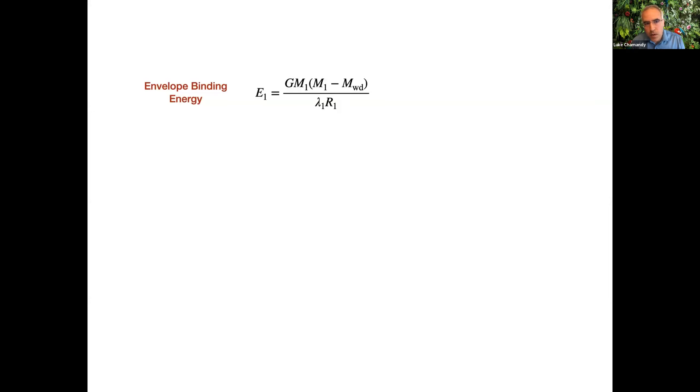So our model is extremely simple. We just take a few different equations and solve for a couple of things. First thing we do is we write down the binding energy of the envelope before the first common envelope happens. That's the same as the left hand side of the equation that Felipe had shown. Then we say that the first common envelope releases orbital energy, and we can neglect the initial orbital energy because it's quite small compared to the final orbital energy. We multiply by this efficiency factor alpha one. That accounts for some fraction of the binding energy.